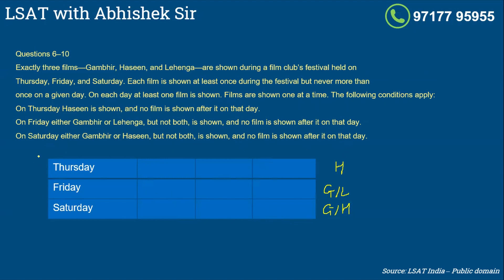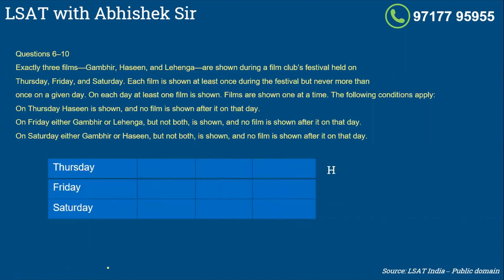So let me just look at what are the maximum number of movies that you can show over these three days. On Thursday, you can show all three movies - Lehenga, Gambhir, and Haseen. I'll show Haseen as the last movie because then I'll have options. For Friday, I keep Gambhir or Lehenga as the last slot because when I keep it at the last slot, I've got more options. I can show one movie and let's say Haseen here. And this is again Gambhir or Haseen as the last movie, and Lehenga then. So maximum movies that I can show here would be seven. Seven are the maximum movies.